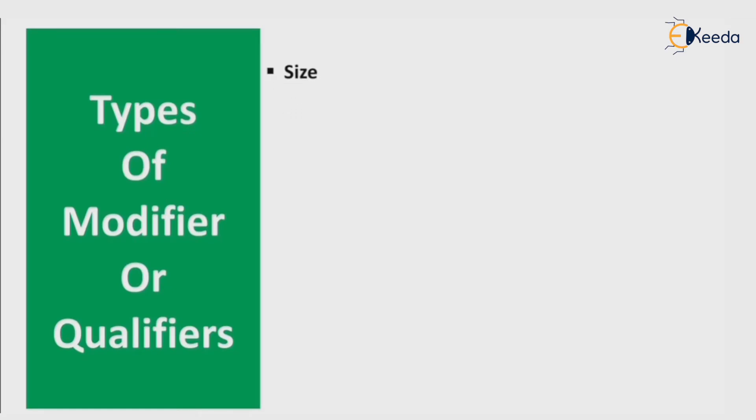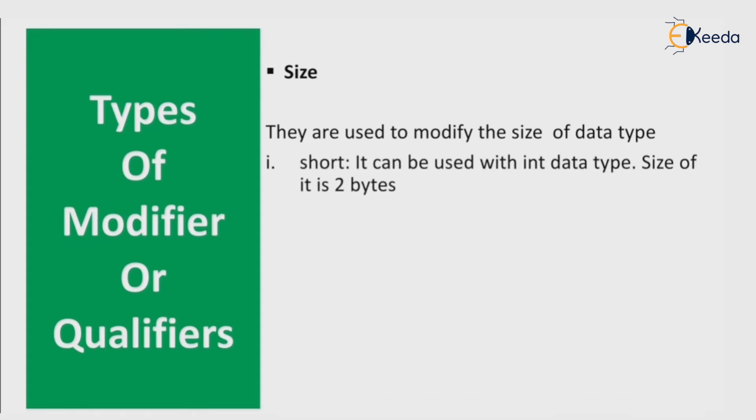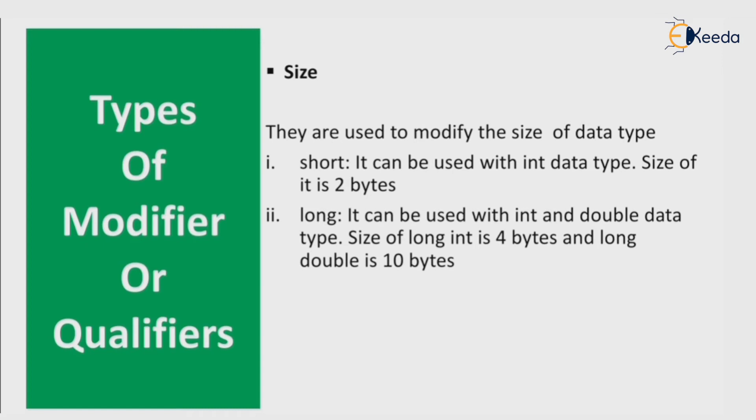Now let's see different types of modifiers or qualifiers one by one. First is size. They are used to modify the size of data type. Short can be used with int data type, size of it is 2 bytes. Long can be used with int as well as double data type. Size of long int is 4 bytes, and long double is 10 bytes.